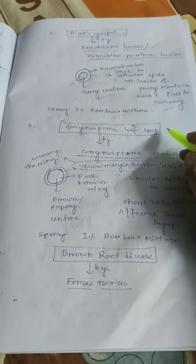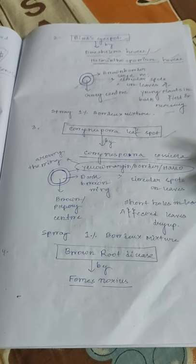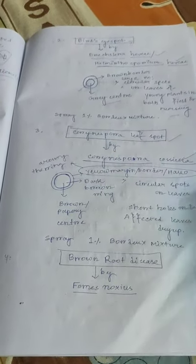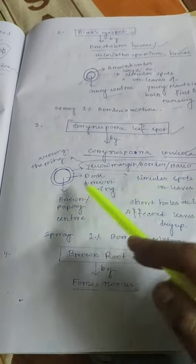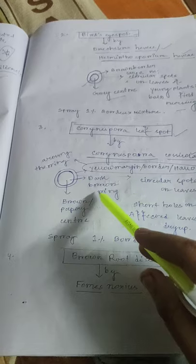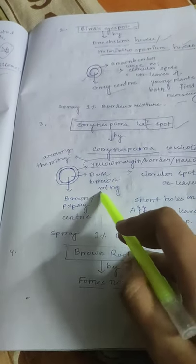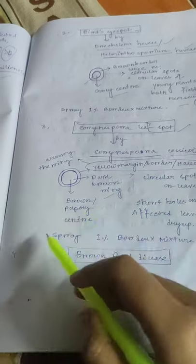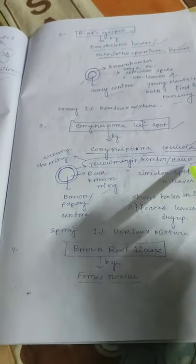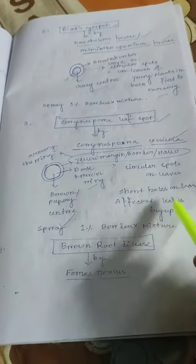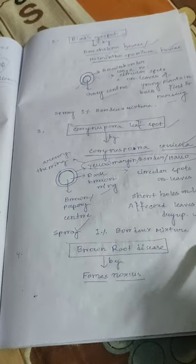The third type of disease of rubber is Corynespora leaf spot, caused by Corynespora cassiicola. Symptoms include circular spots on leaves with a dark brown ring, a brown or peppery center, and a yellow margin or halo around the ring. Shot holes appear on the leaves and affected leaves dry up. Control is by spraying 1% Bordeaux mixture.